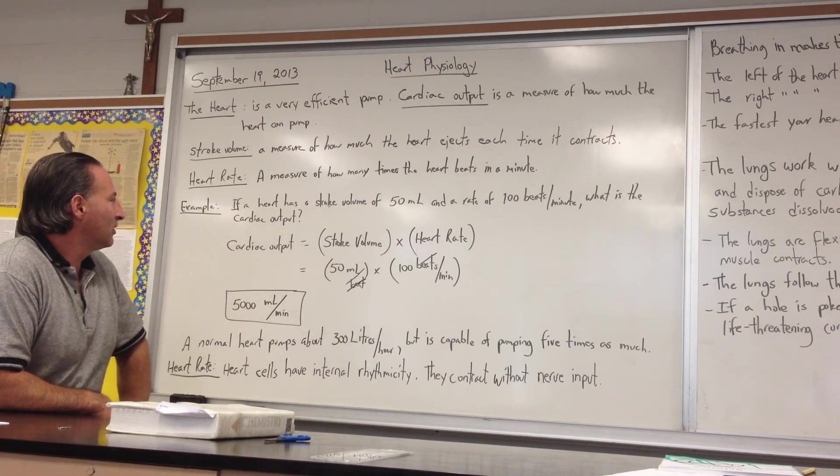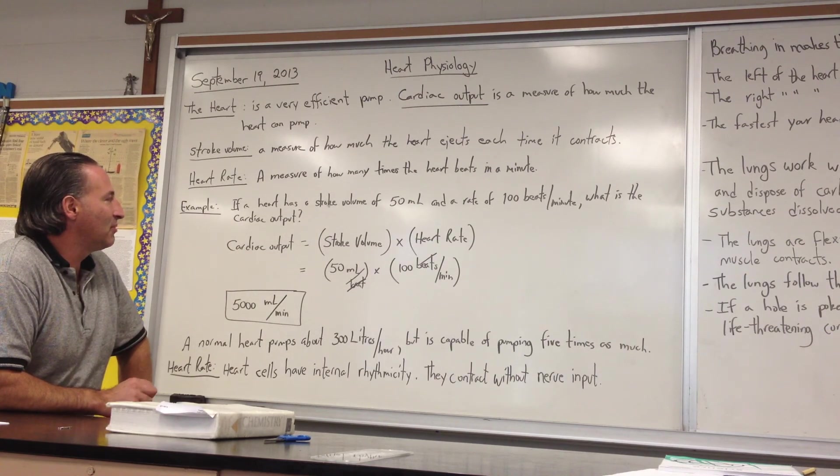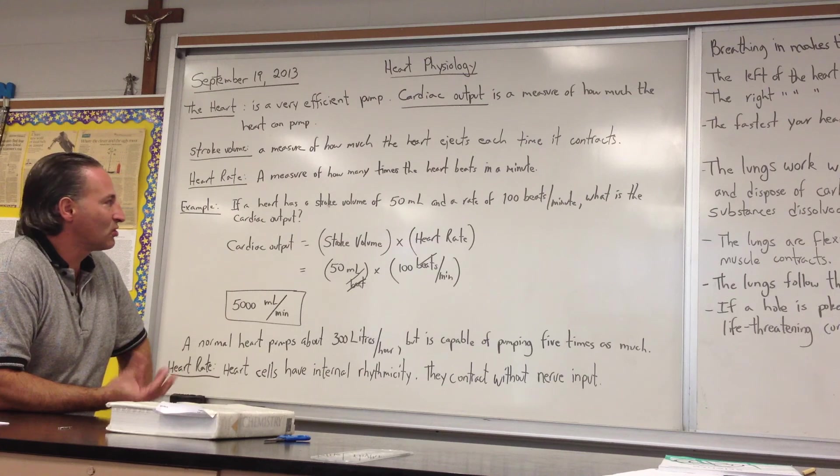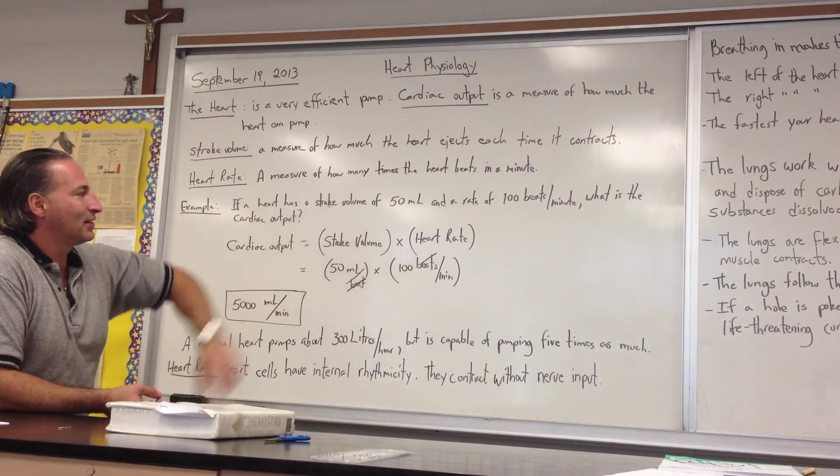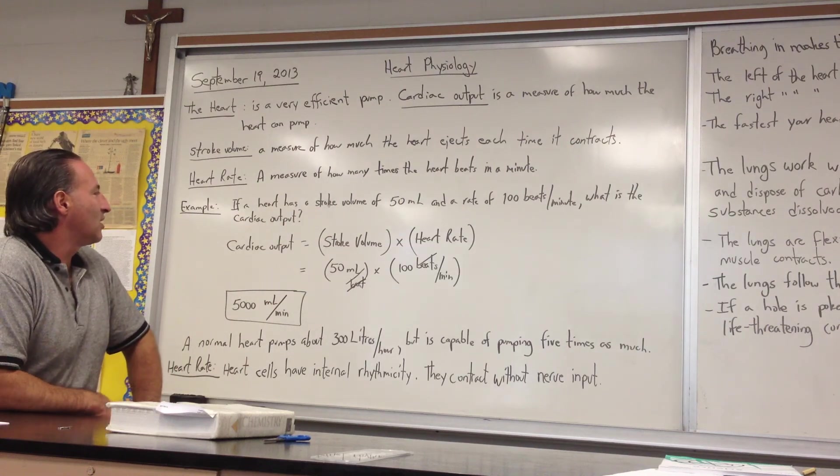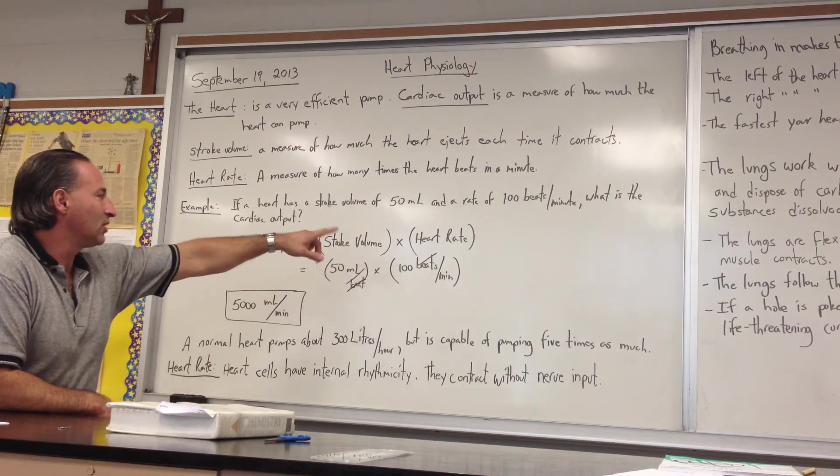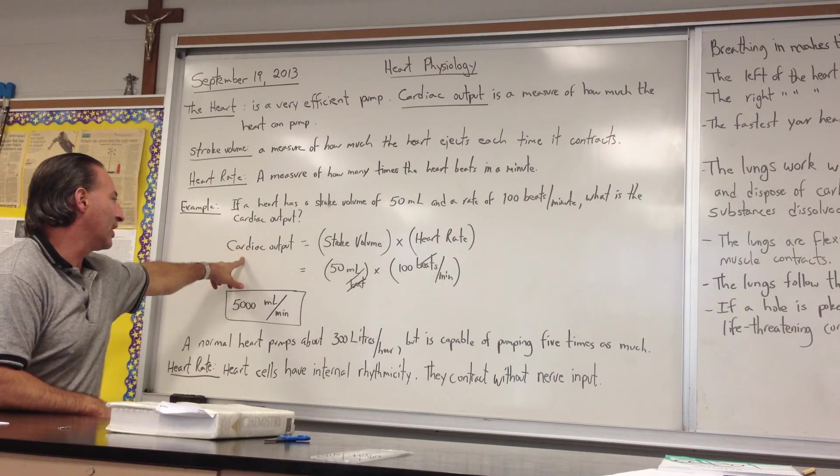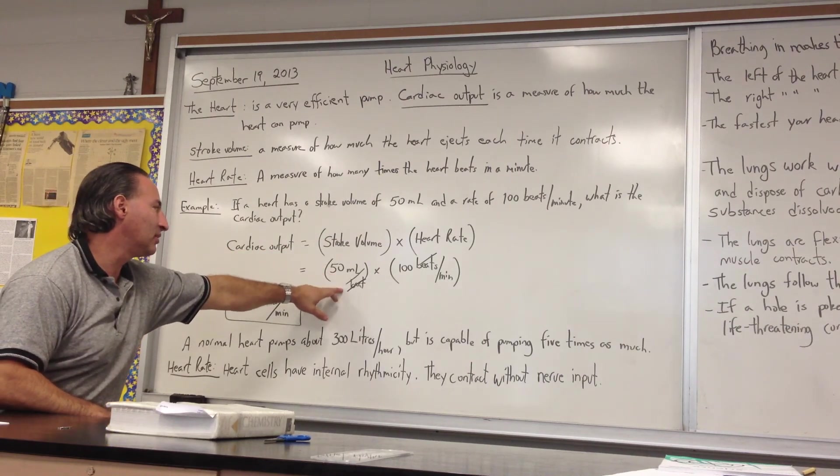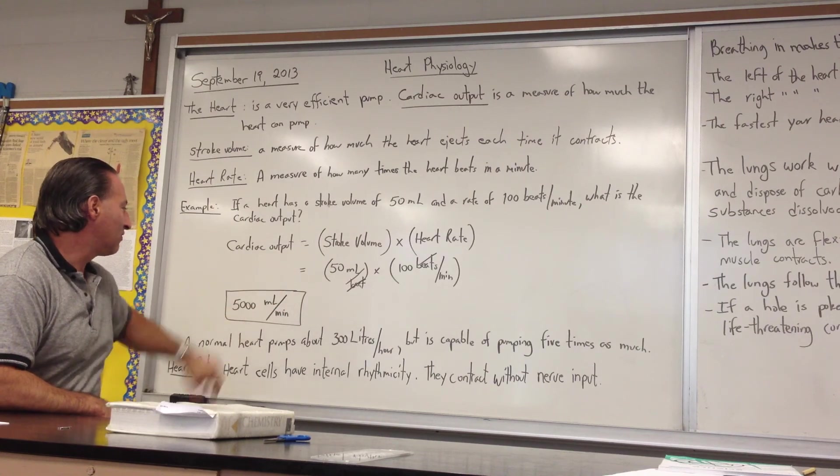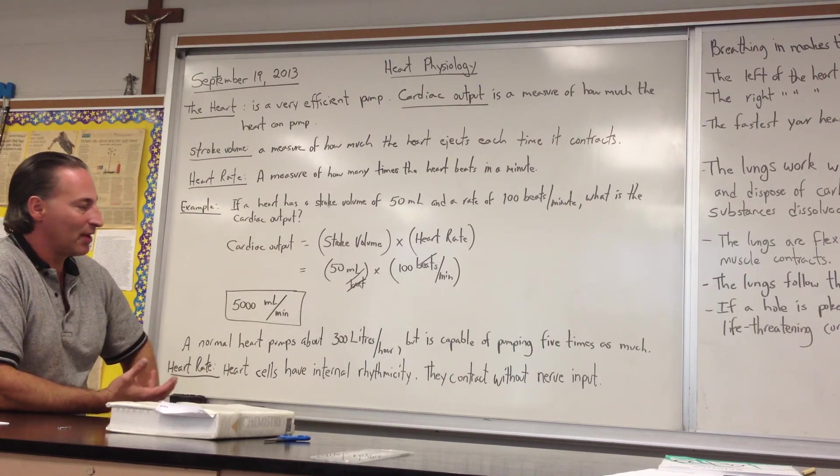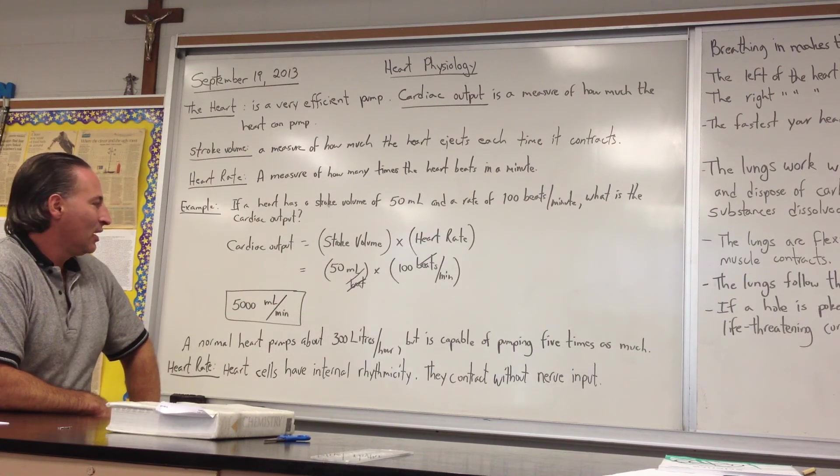For example, if a heart has a stroke volume of 50 mLs, meaning that every time the muscle contracts, it squirts out 50 mLs of blood, and then if the heart is contracting 100 times a minute, what is the cardiac output? Stroke volume times heart rate will give you the cardiac output. So 50 mLs per beat times 100 beats per minute, beats cancel, and you get 5,000 mLs per minute.